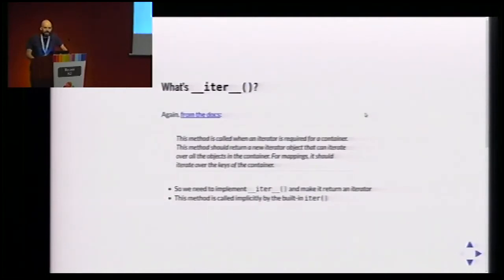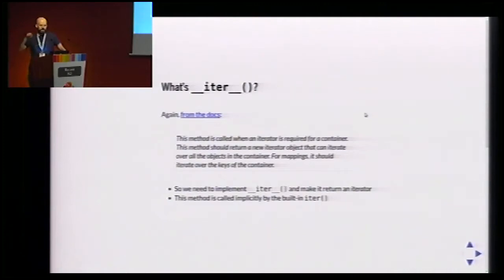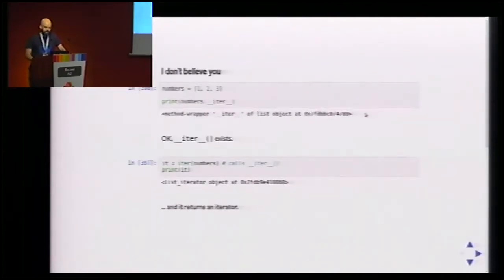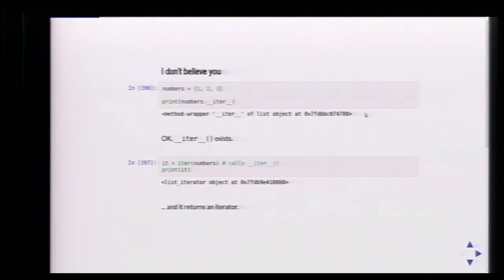We have to implement __iter__, this magic method. It's going to be called when we need an iterator, and it should return a new iterator. So we need to implement __iter__ and make it return an iterator. If we have a list of numbers, we can call iter() the built-in and get the iterator — it's a list_iterator object.